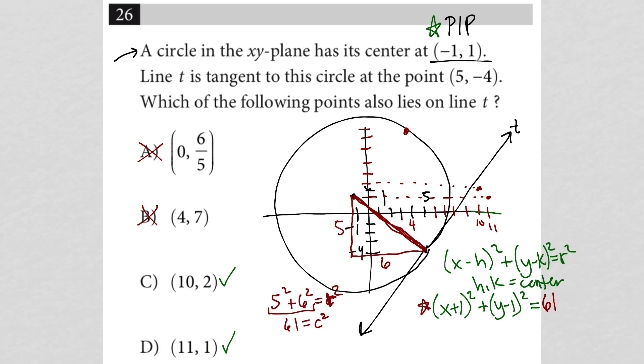All right, how about the equation for the tangent line? Because, again, the question's asking me for finding a point, basically which one of these points is on the tangent line. Well, what do I know about the tangent line? Now I know that it goes through the point 5, negative 4, so I have that point. I also know that the slope of a tangent line is perpendicular to the slope of the radius of the circle.